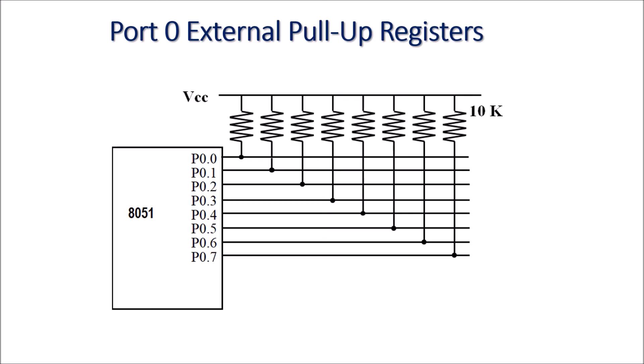When port 0 is used for connecting input or output devices, pull-up resistors must be connected to each port terminal — between VCC and the port terminal. Typically, 10 kΩ resistors are used.